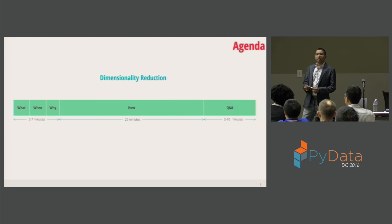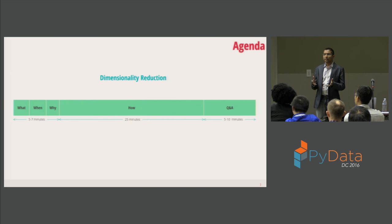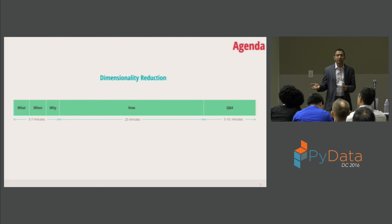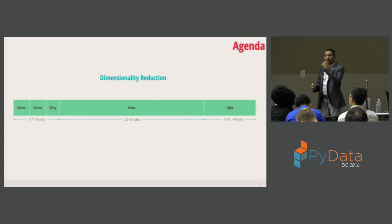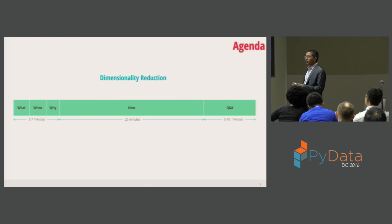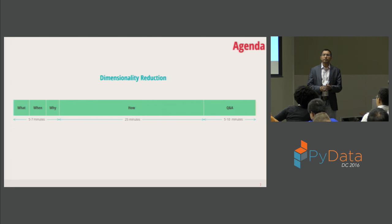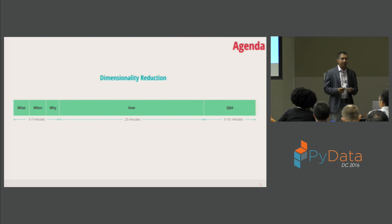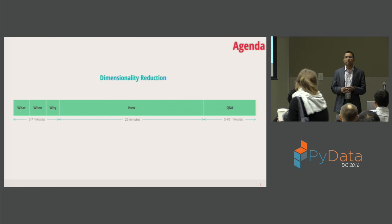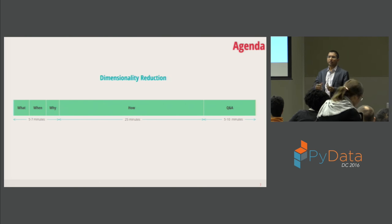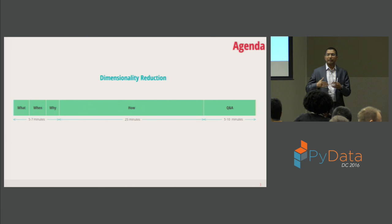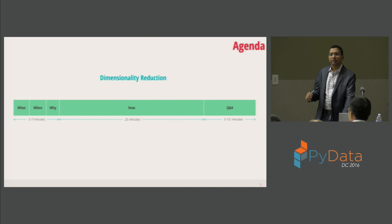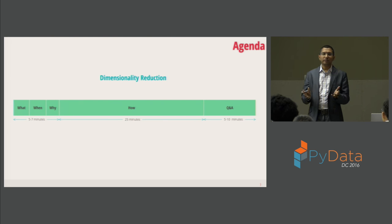A quick agenda of what we're going to talk about today. The first five to seven minutes, we'll talk about what dimensionality reduction is, when we should use it, and why data scientists should use dimensionality reduction techniques. The majority of the talk is about how to do it. The emphasis is on practicality — not too much theory. I have some Python code you can review after the talk, and the video will be posted on the website. Finally, five to ten minutes for questions, so please hold off until the end.